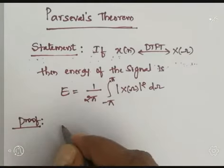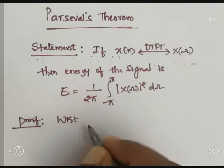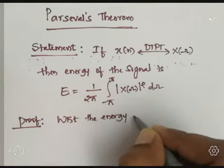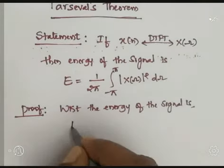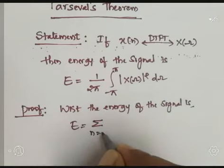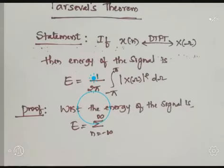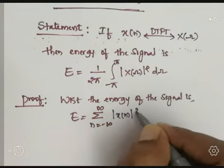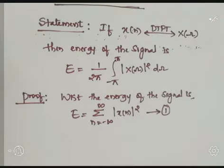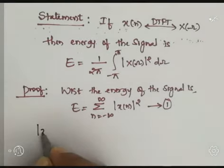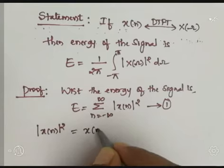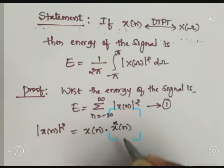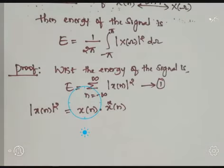As already discussed in previous videos, we know that the energy of the signal in the time domain is calculated using the formula: E equals summation n equal to minus infinity to plus infinity, mod of X of n whole square. Let us represent this as equation number one. Now, mod of X of n whole square is also equal to X of n multiplied by complex conjugate of X of n.